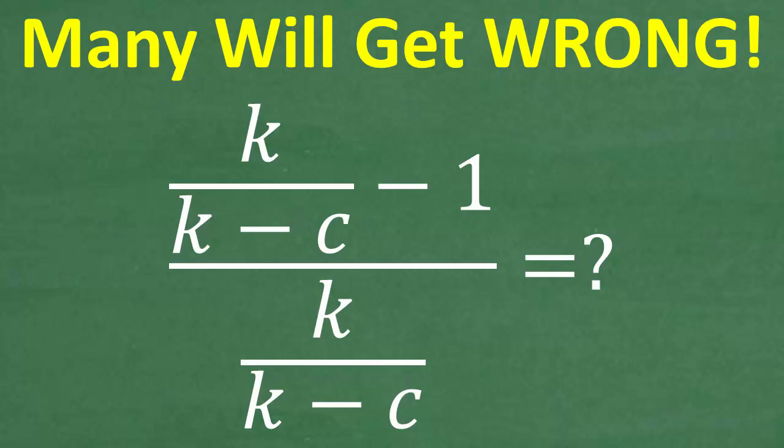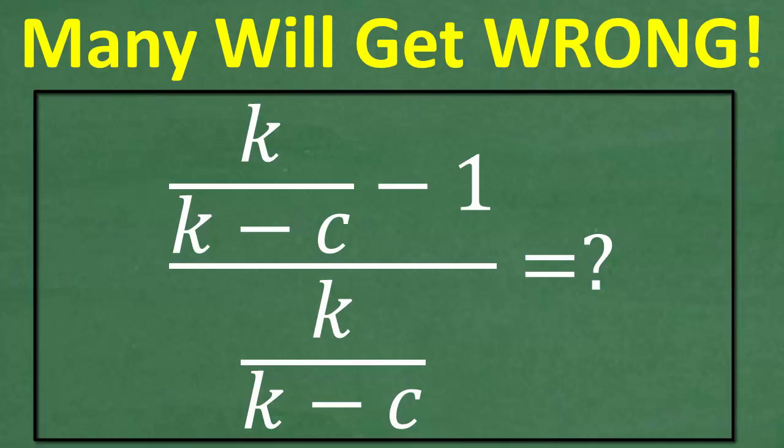Let's take a look at this problem. What we have here is a complex fraction — so this is not even a regular fraction, it is a complex fraction, which is a fraction over another fraction. We have k over (k minus c), minus 1, over k over (k minus c). What we want to do is simplify this expression.